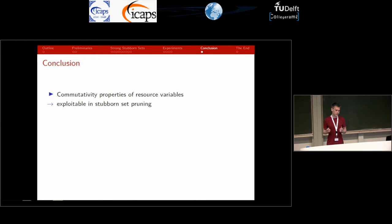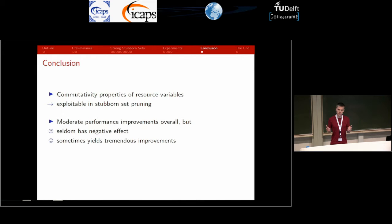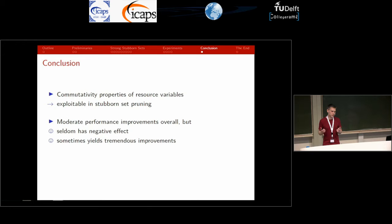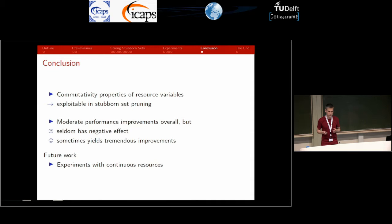To conclude: we have seen methods to extend the stubborn set definition in order to take into account resource variables and exploit their commutative behavior. Even though the modified stubborn set construction only improved slightly over the previous method, there were very few domains where performance was negatively influenced. On the other hand, there were several domains where coverage or at least search reduction improved significantly. For future work, we would like to experiment with continuous resource variables, and the explicit consideration of resource variables in the stubborn set definition also suggests looking at other state reduction techniques.